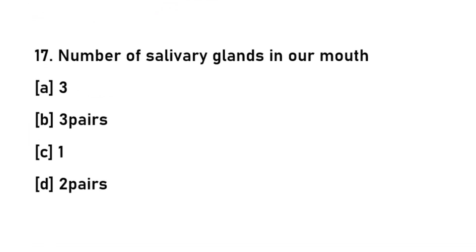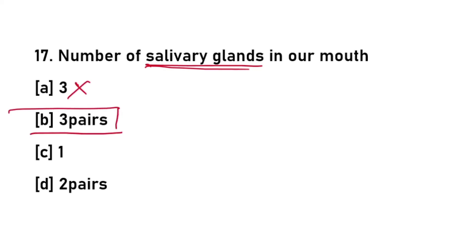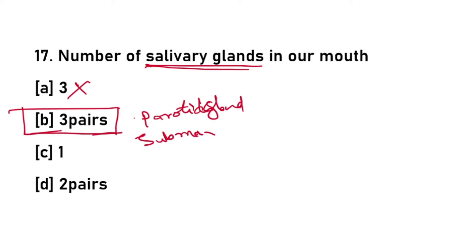The number of salivary glands in our mouth: there are three pairs of salivary glands present in our mouth. They are the parotid glands, the submaxillary glands, and the sublingual glands.